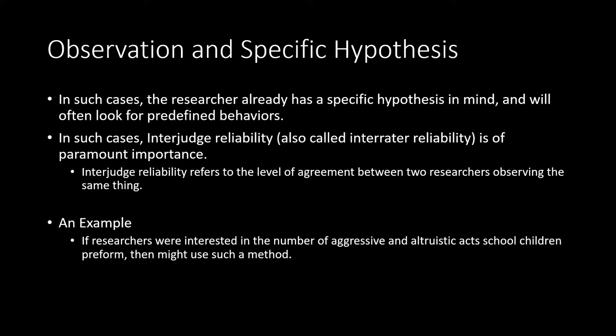In order to have high inter-judge or inter-rater reliability, one would have multiple judges observing these children, each coding independently how many aggressive acts and how many altruistic acts they witnessed. Afterwards, they would get together and compare how many behaviors each of them saw, along with which behaviors specifically were classified as aggressive or altruistic. Sometimes there will be high levels of agreement and other times there will not be, depending on the specificity of the behaviors being witnessed and the preconceived notions of the judges themselves. Unfortunately, there is no standard across the field for what counts as a sufficient level of inter-judge reliability, and this is often left to readers to establish whether it is high enough to believe the results found.